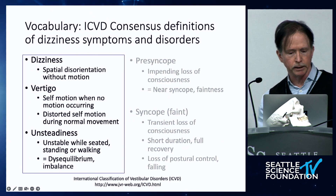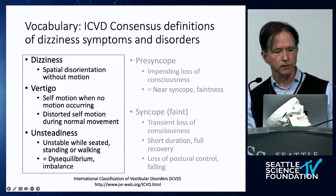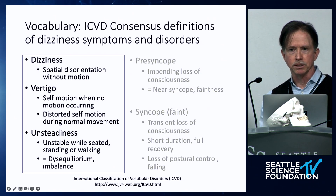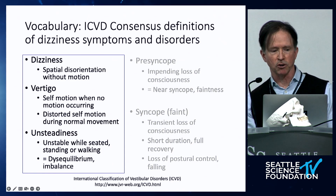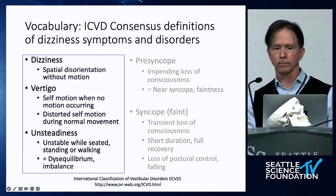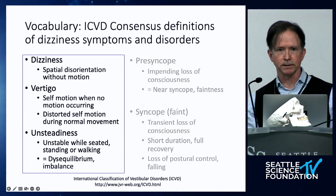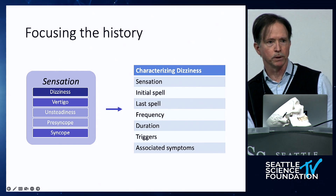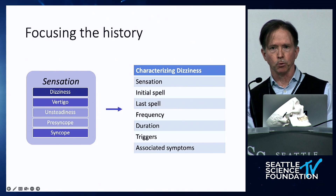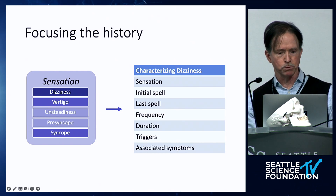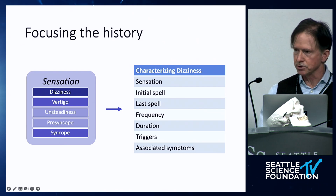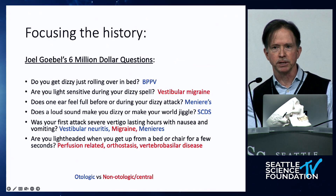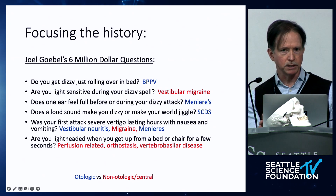One helpful resource is the International Classification of Vestibular Disorders — the link will be at the end — which provides consensus definitions for different symptom types. Dizziness is a spatial disorientation; vertigo is a description of self-motion when there isn't any, or a distorted sense of self-motion; unsteadiness relates more to disequilibrium or imbalance. Once you've focused on describing the sensation — and there may be multiple — try to pull each one apart: when the first spell was, when the last one was, how often, how long they last, any obvious triggers, and associated symptoms.